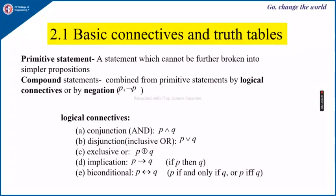Next, a primitive statement is a statement which cannot be further broken into simpler propositions. Whereas a compound statement is combined from various primitive statements by logical connectives or by negation. Here, the negation is represented by this symbol. P is a proposition and not of P is a negation of this P.